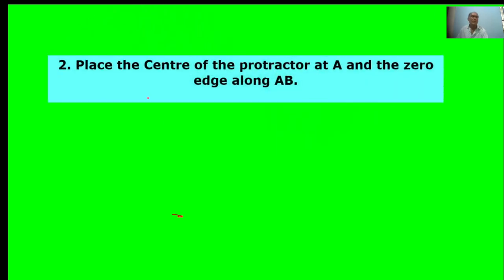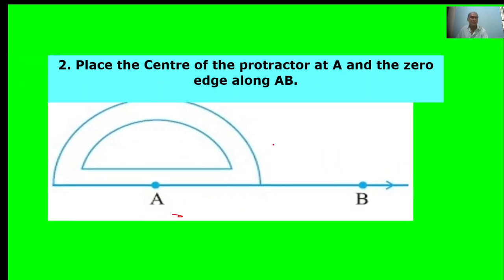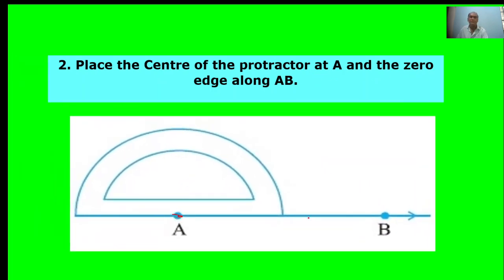Second point: Place the center of the protractor at A and the zero edge along B. Here at A, pick zero. This is the protractor edge. Start with zero near B.